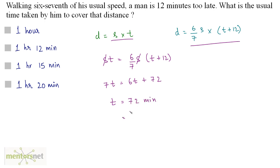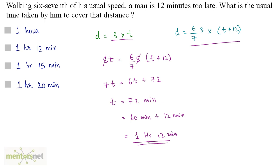72 minutes can be split into 60 minutes plus 12 minutes. Since 60 minutes is 1 hour, the regular time is 1 hour and 12 minutes. So option B is the correct answer.